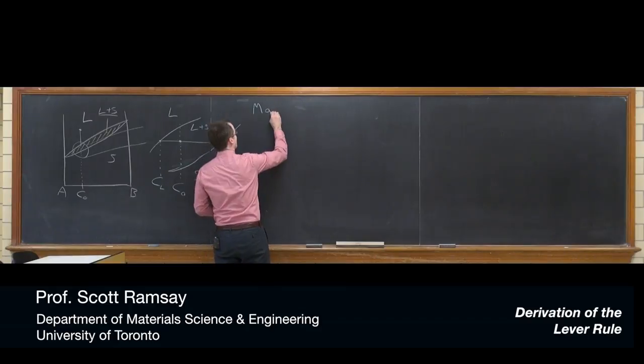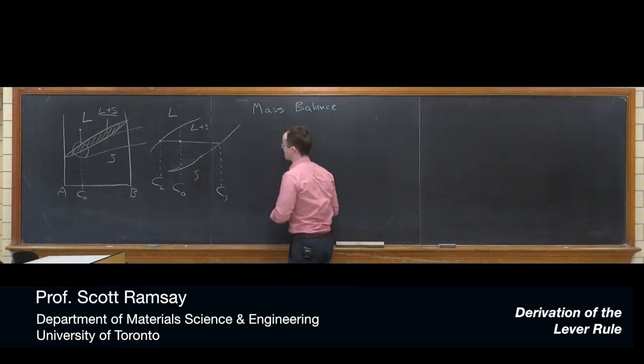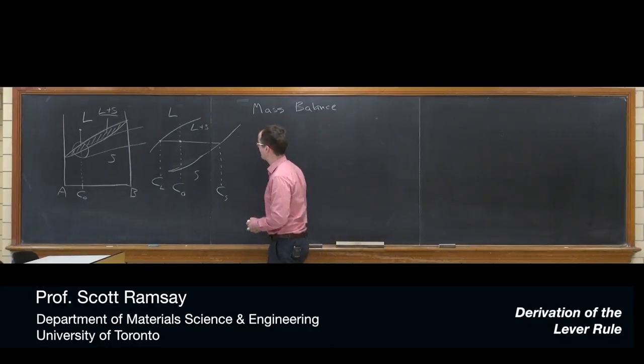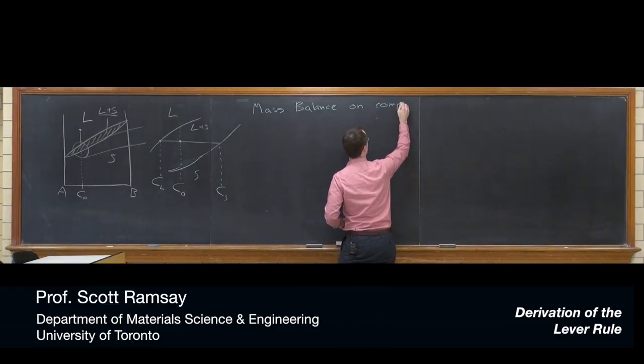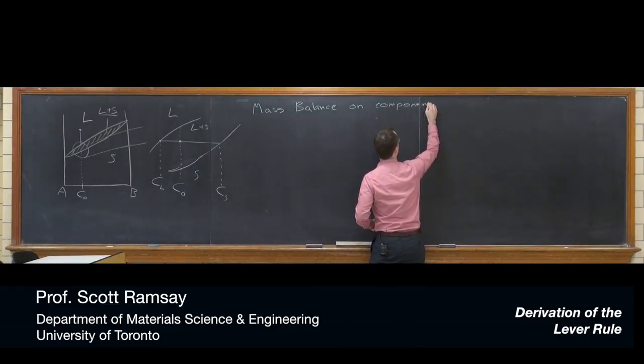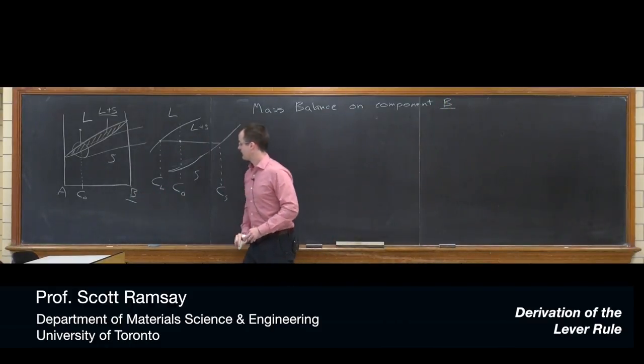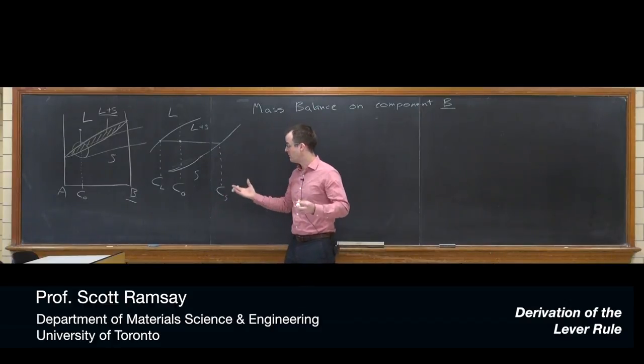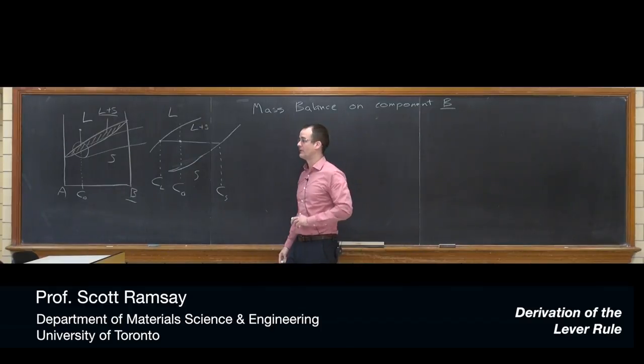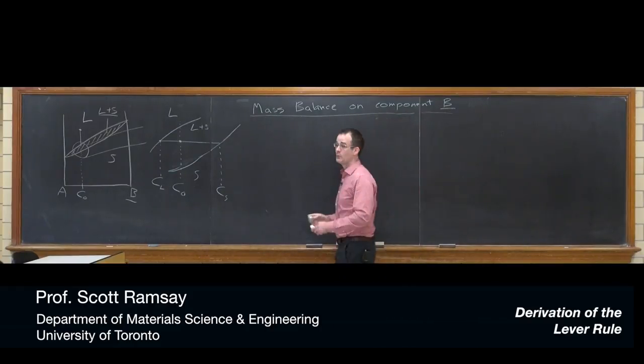So what we need to do is we just start with a simple mass balance. Let's do a mass balance on component B. Just this general system. There's component B. Let's do a mass balance on that. It has to go into, component B has to go into either liquid or solid. It can't go anywhere else. It can't disappear from existence. So it's got to be there. So let's just do a mass balance on that. And we'll see from that we'll follow the lever rule.